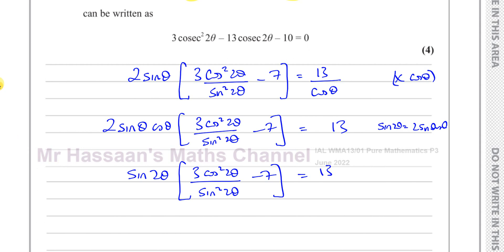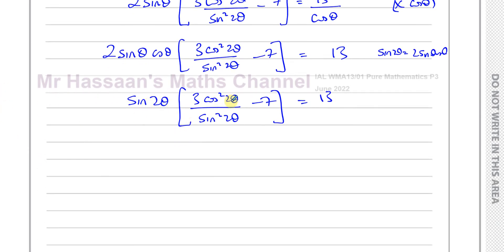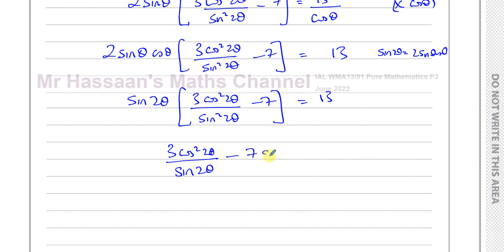Expanding the bracket: sin2θ times 3cos²2θ/sin²2θ gives 3cos²2θ/sin2θ, with one factor of sin2θ cancelling. Then multiplying the −7 term gives −7sin2θ. So we have: 3cos²2θ/sin2θ − 7sin2θ = 13.